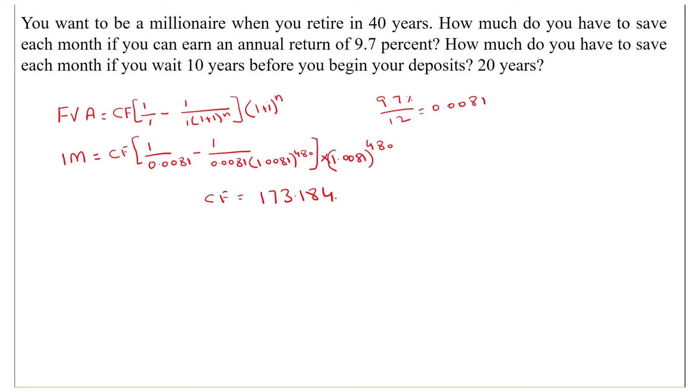The second part of the question says, what will be the amount if you have to wait for 10 years to begin your deposits? So in this question, n will be 30 years. n is 30 multiplied by 12, which equals 360.